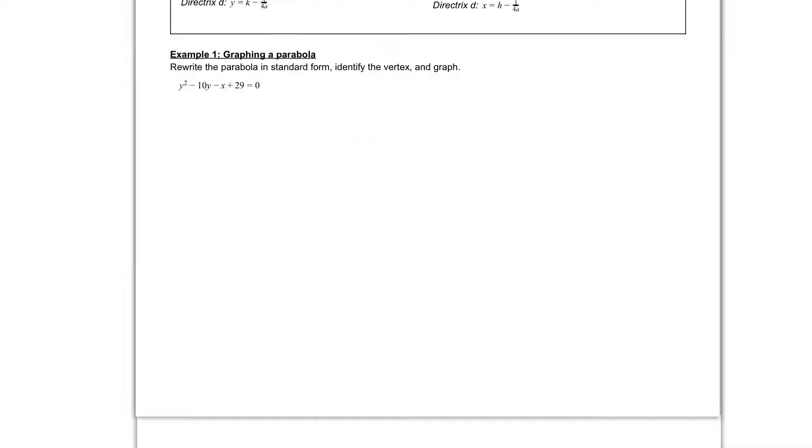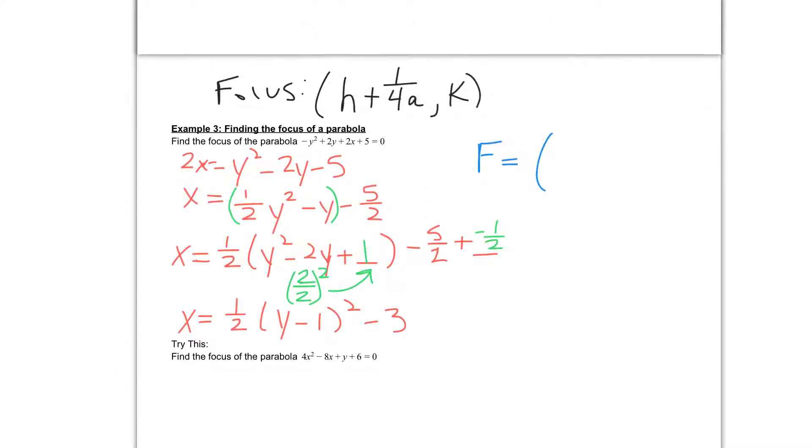So if we go back to our problem, I know that in my problem, my h value is negative 3, that number on the outside. My k value is coming from inside the parentheses, which is 1. And my a value is the number out in front, which is 1 half.